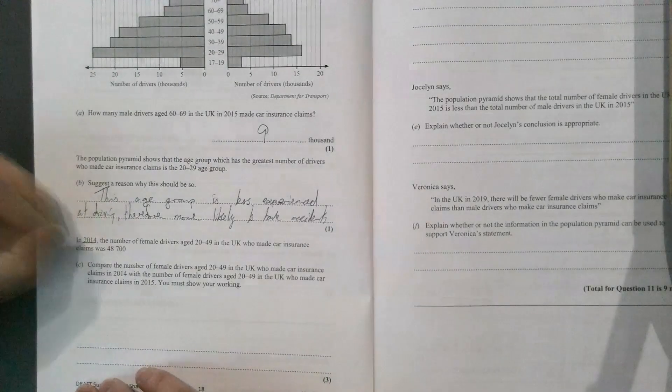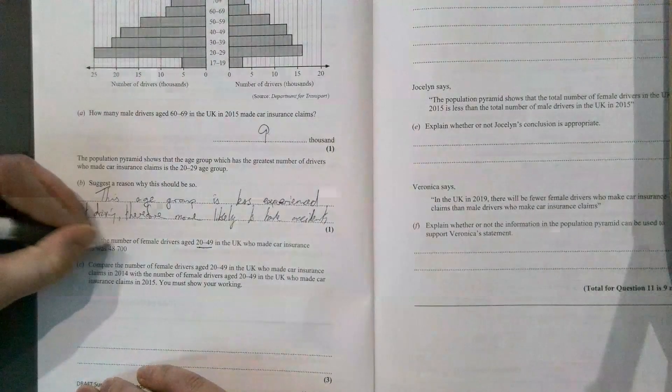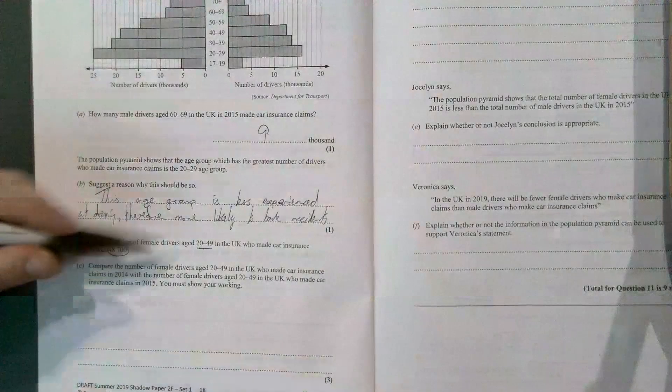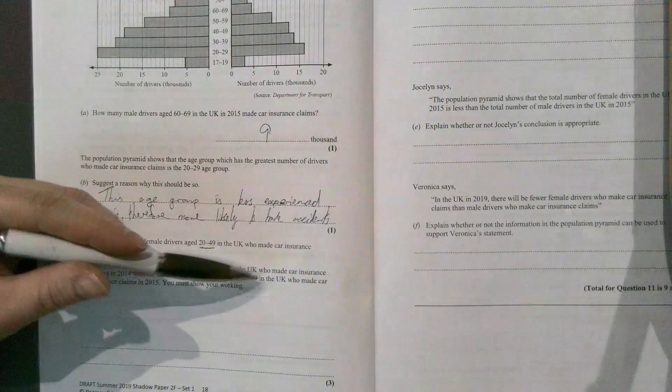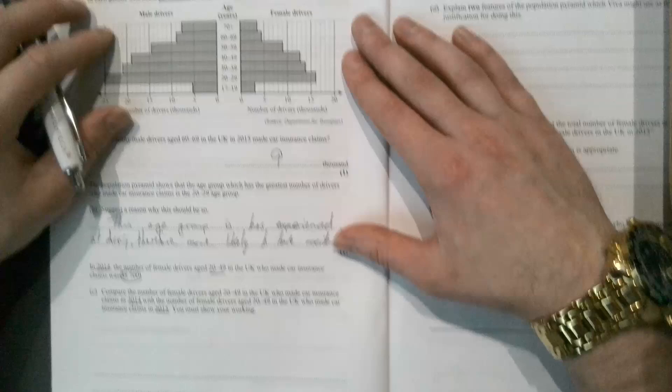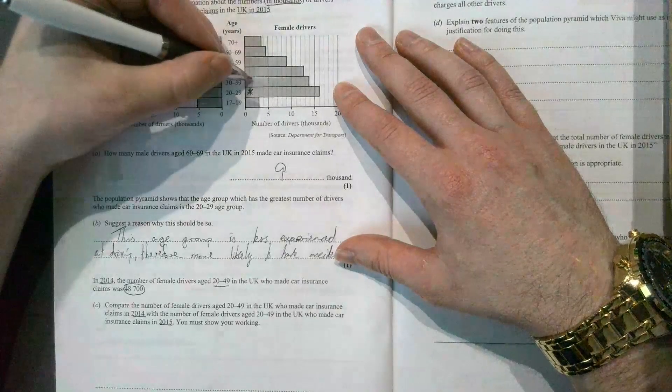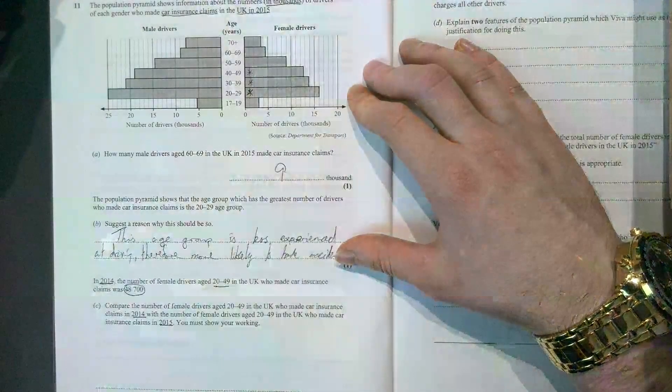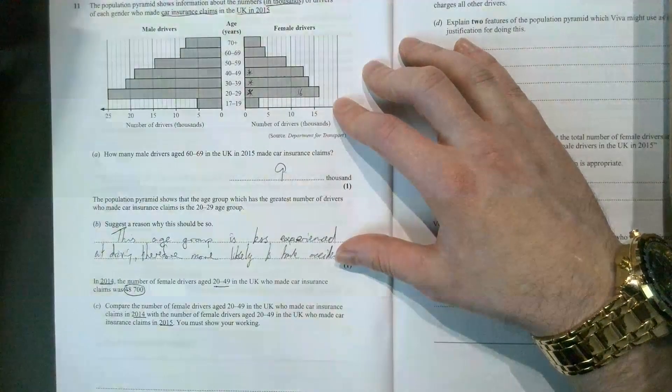In 2014, a different year now, the number of female drivers aged 20 to 49 in the UK who made car insurance claims was this amount. Compare the number of female drivers in that age range who made claims in 2014 with those in 2015. So we're comparing this 48,700 to our numbers up here. You must show your working—it's three marks. For 2015, we want ages 20 to 29, so we want this bar, all the way up to 49, so it's these three bars we need to add together. This first bar comes up to 16, so that's 16,000. The next one is roughly 14.